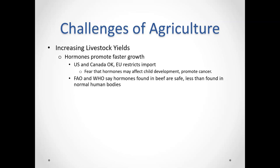In addition to higher yields for plants, we also have higher meat production — more meat is available at less cost than traditionally. There are different ways we've been able to do this. Some ways include using hormones to promote growth, especially in cattle. This is a popular way to get cows to grow more quickly so they can be brought to slaughter.